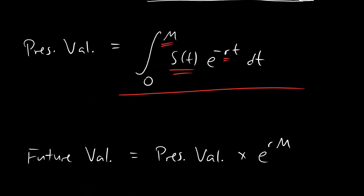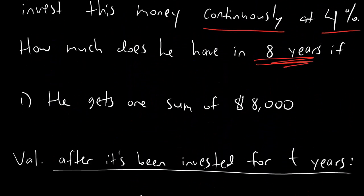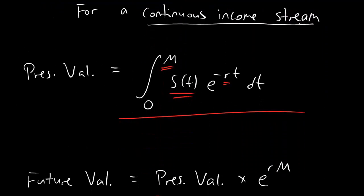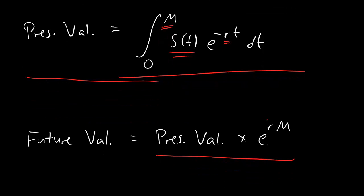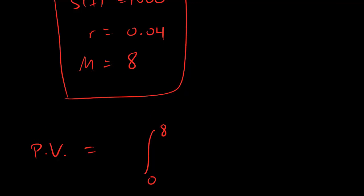Now let's remember what formula we're plugging those into. The formula with the integral is for present value only. When you're trying to figure out future value, you have to figure out present value first, and then multiply that by E to the RM. We're figuring out how much money Mr. Frenchy Poo has 8 years from now — this is definitely a future value. So first we find present value, then multiply by that E term to get future value. Present value equals the integral from 0 to 8 of 1,000 times E to the negative 0.04T, DT.